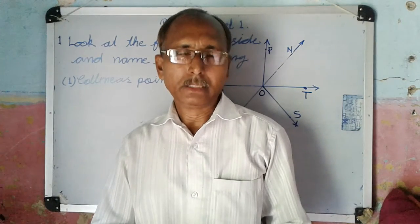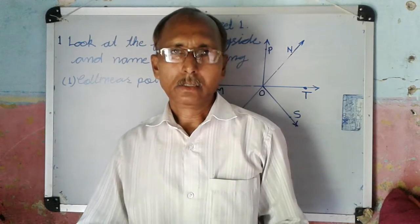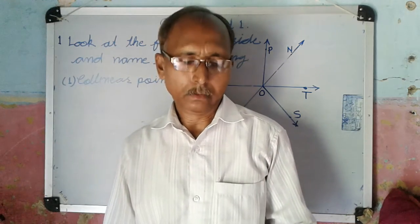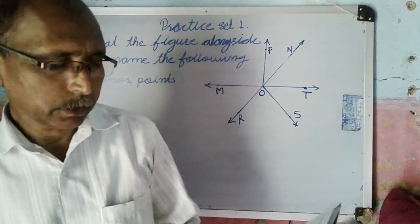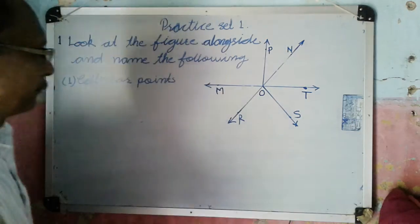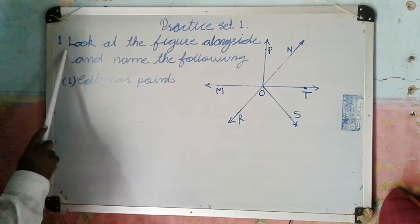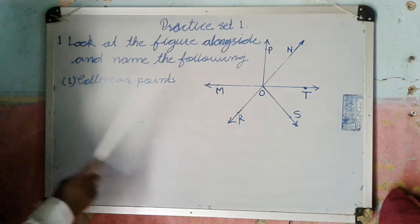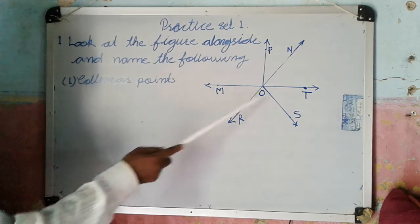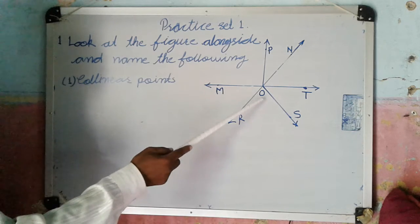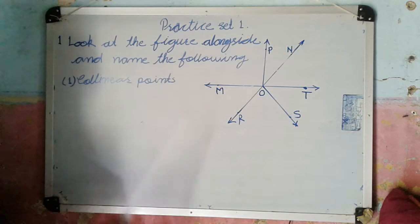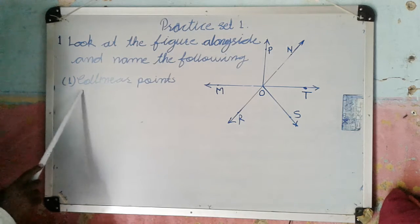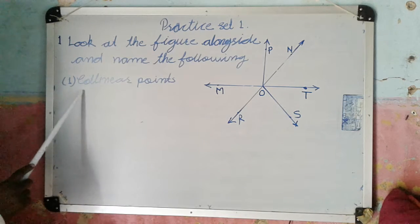In our first chapter, basic concepts in geometry, we will solve practice set one. Question number one is: look at the figure alongside and name the following. So you have to observe this given figure and name the following.